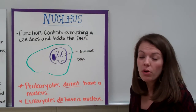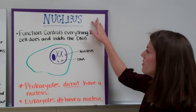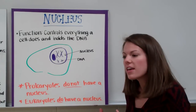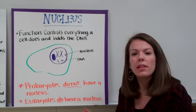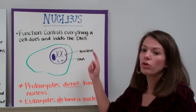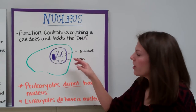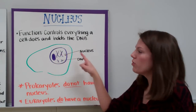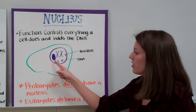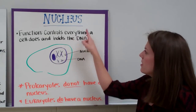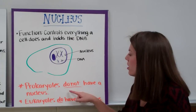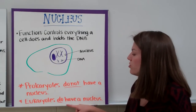Now we're going to discuss the different organelles inside cells. The first one is the nucleus. The function of a nucleus is that it controls everything a cell does and holds the DNA. If you think of a cell as a school, the nucleus is like the principal — it controls what happens inside. In our rough sketch, the purple region is the nucleus, which holds DNA including four chromosomes. Prokaryotes do not have a nucleus; eukaryotes do.